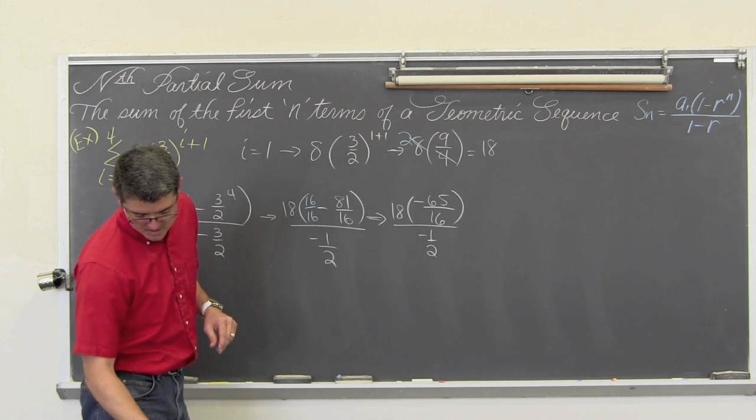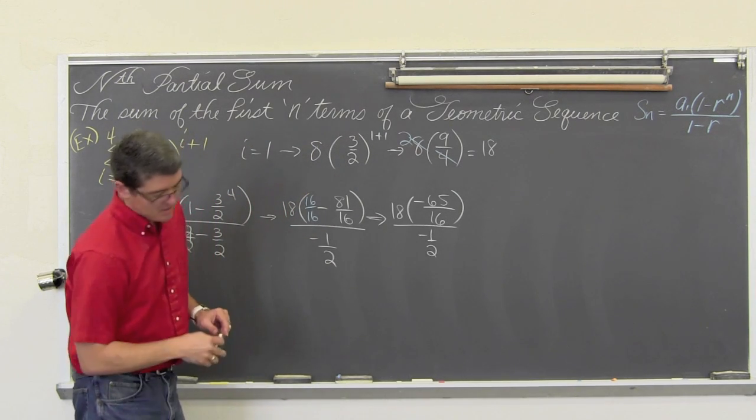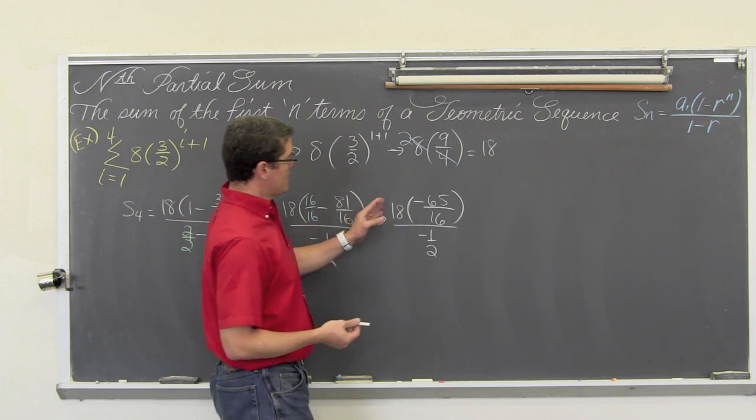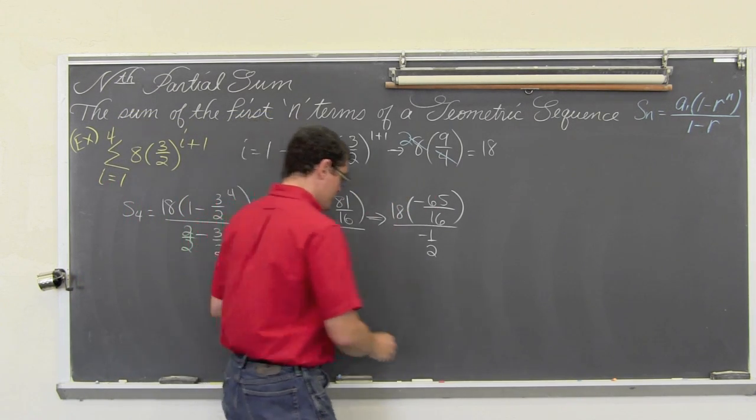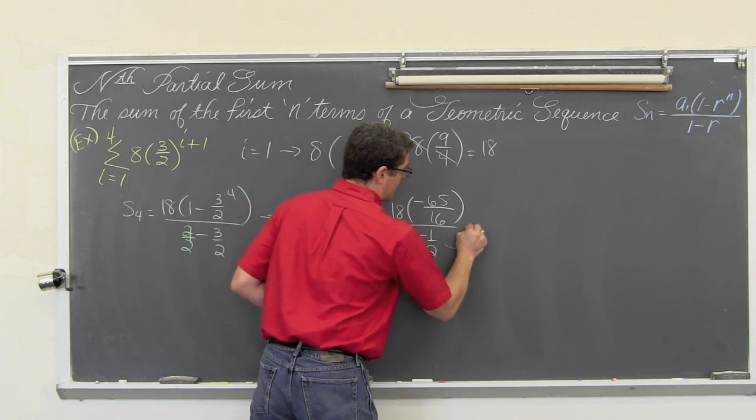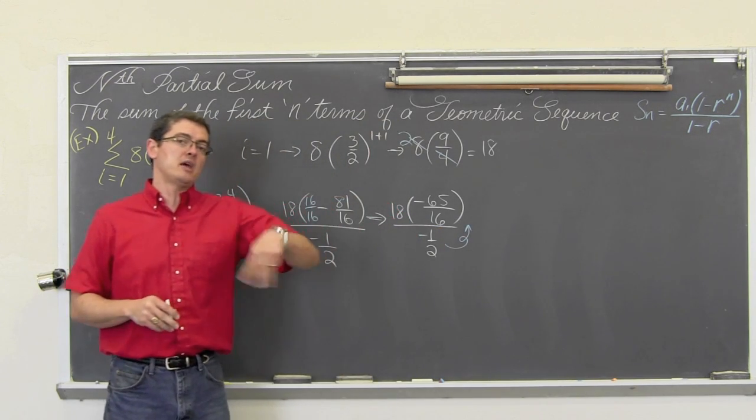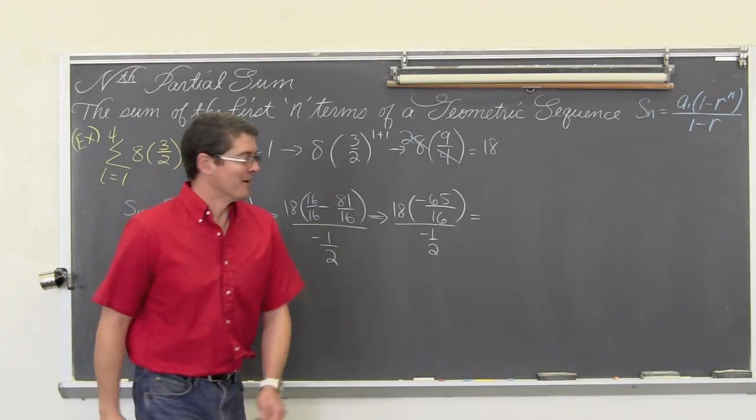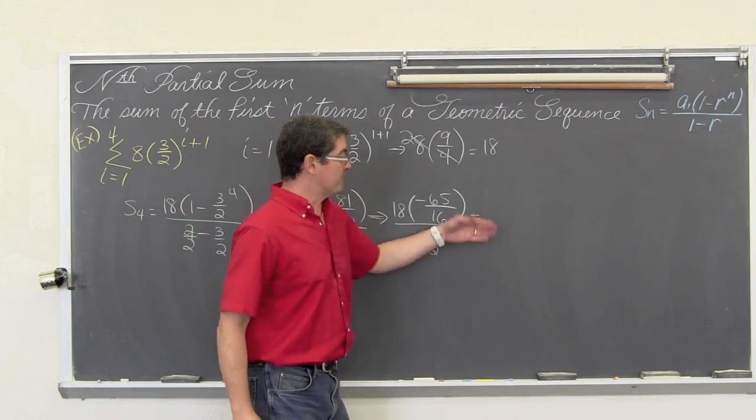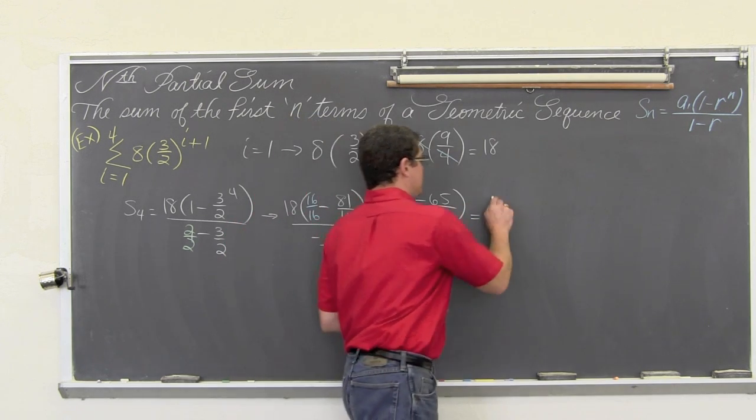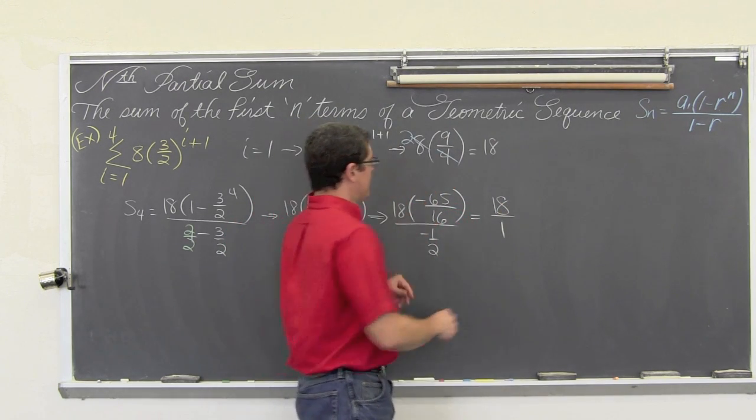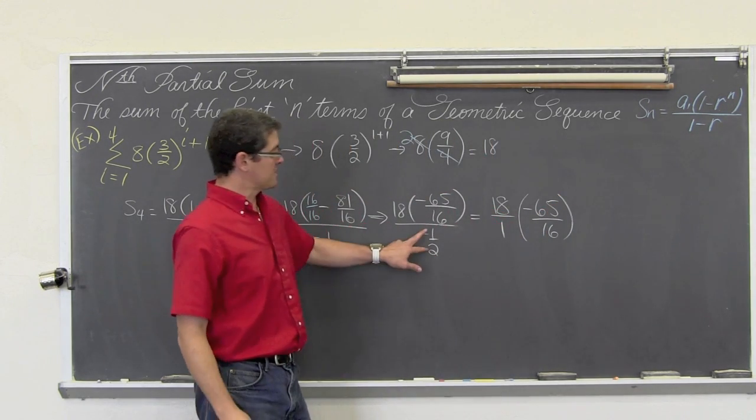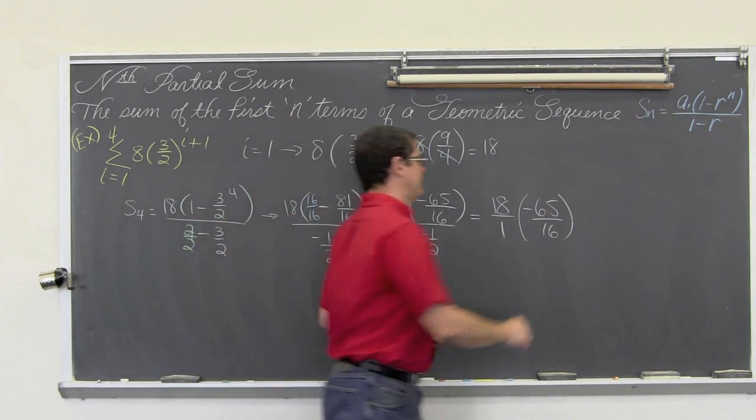Let's go ahead and we will keep all this written in multiplication form and we are going to flip up that denominator because we are dividing by a fraction. I am going to show the multiplication of the reciprocal. We are going to take the denominator and flip it up. So we are going to have 18 over 1, we are going to have negative 65 over 16, and we are going to take that denominator and flip it up and have negative 2 over 1.